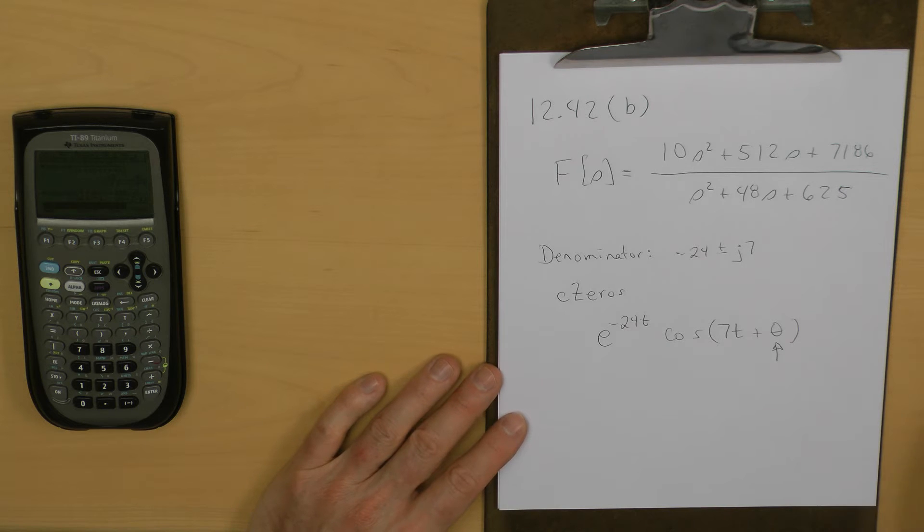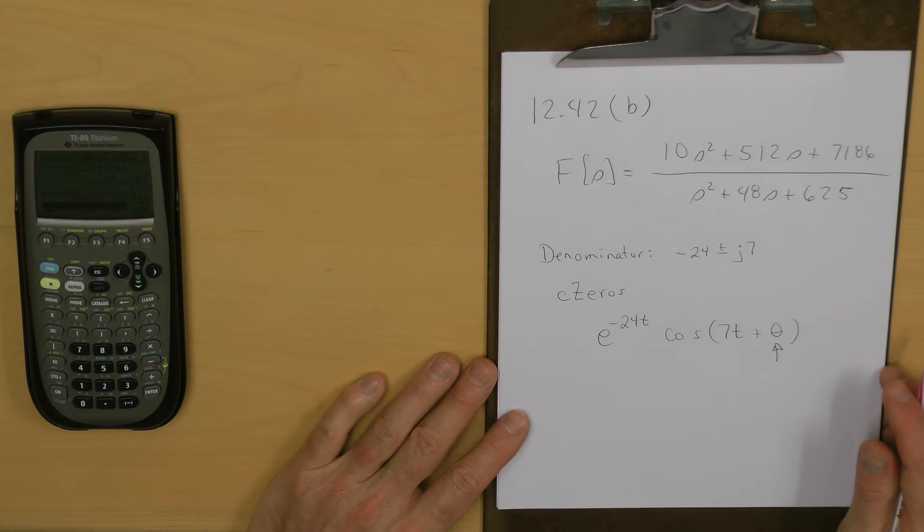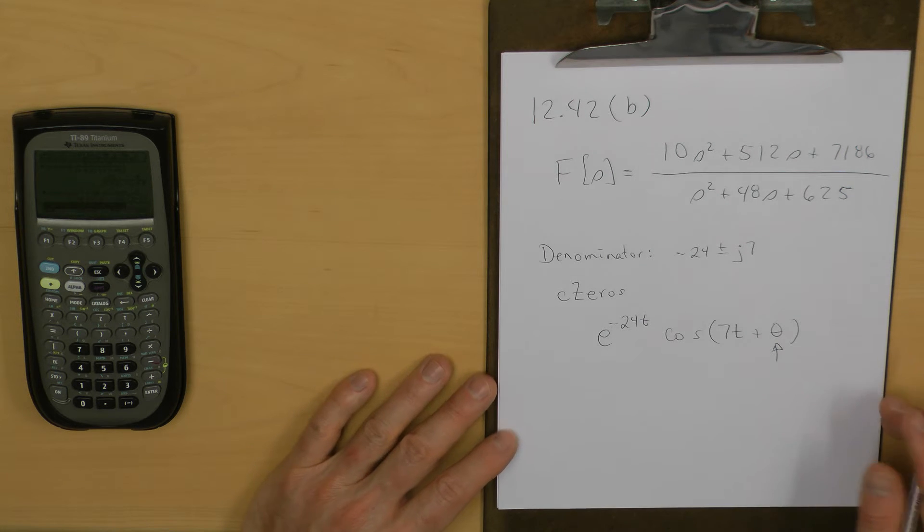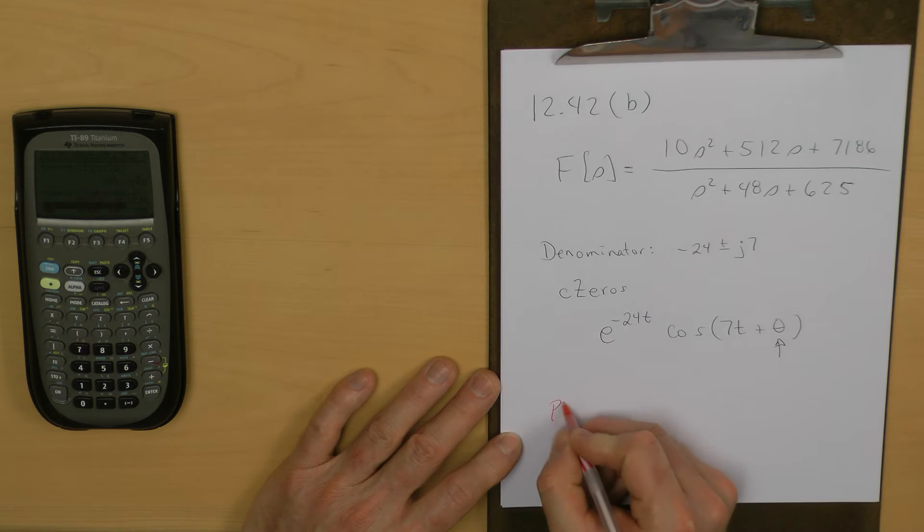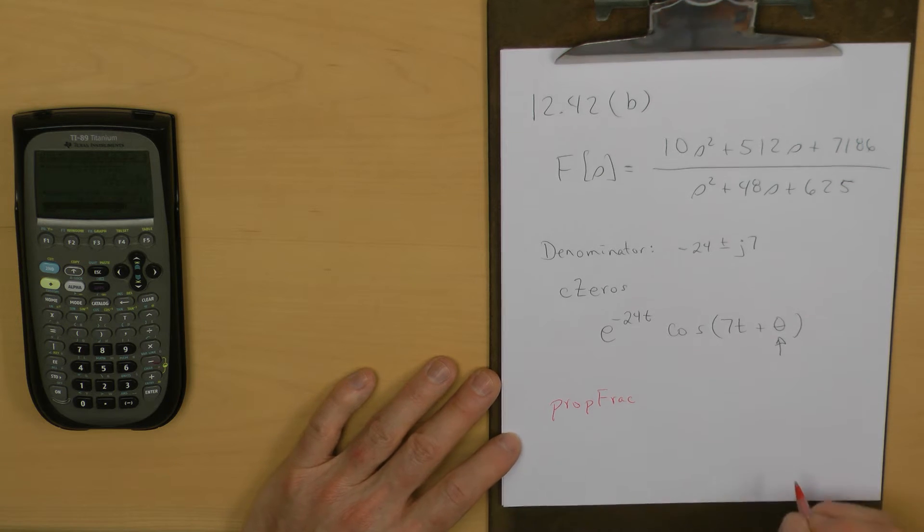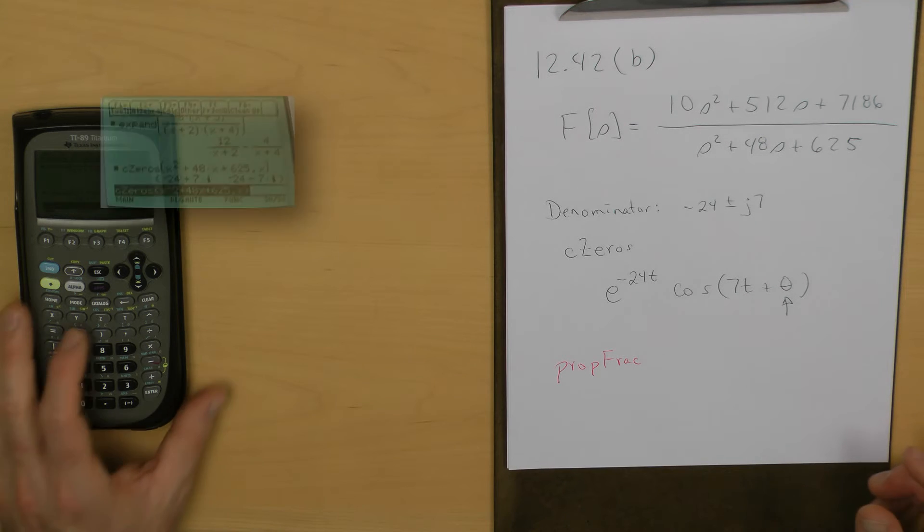Before we can do that, we actually need to convert this capital F of S to where we have a proper piece identified. We can go with our calculator and do this proper fraction operation. Let's do that.